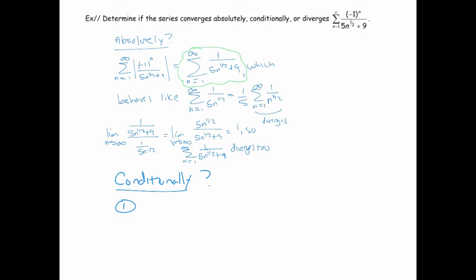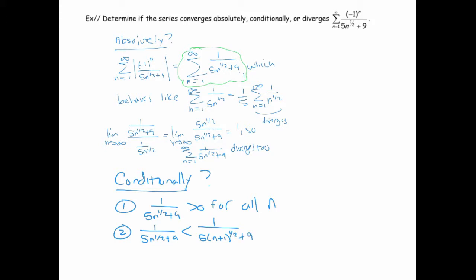What do we need? We need all the terms to be positive, and it's true that those are positive for all n greater than or equal to 1, which is where n starts. And we need the terms to be decreasing. Is it true that the nth term is less than the (n+1)th term? We made the denominator slightly bigger by taking the square root of n+1 instead of the square root of n, so if the denominator is slightly bigger, the whole expression is slightly smaller. So that's true as well.